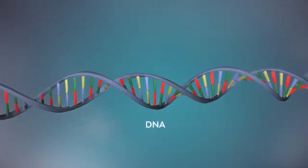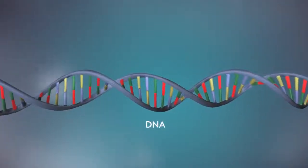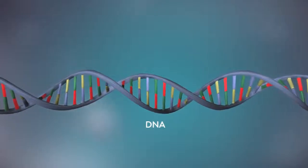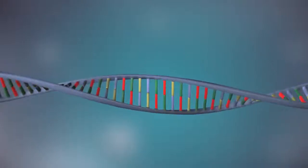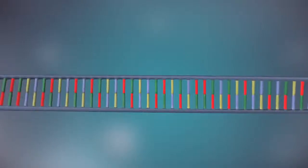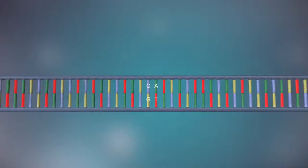DNA is a molecule made up of two strands twisted around each other in a double helix shape. Each strand is made up of a sequence of four chemical bases represented by the letters A, C, G and T.